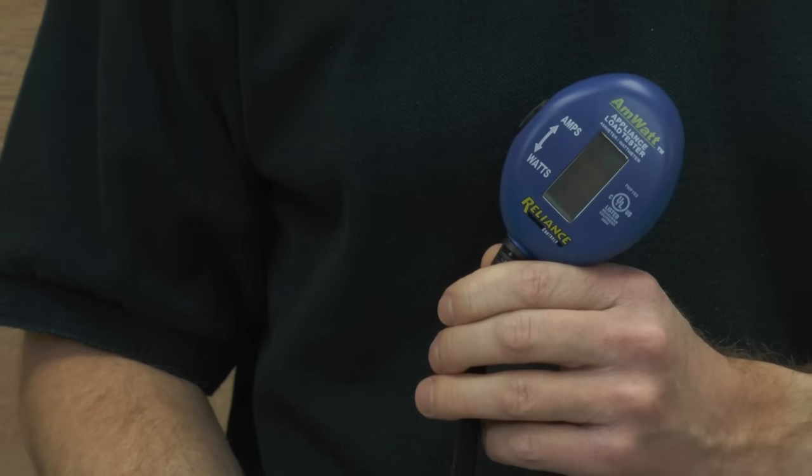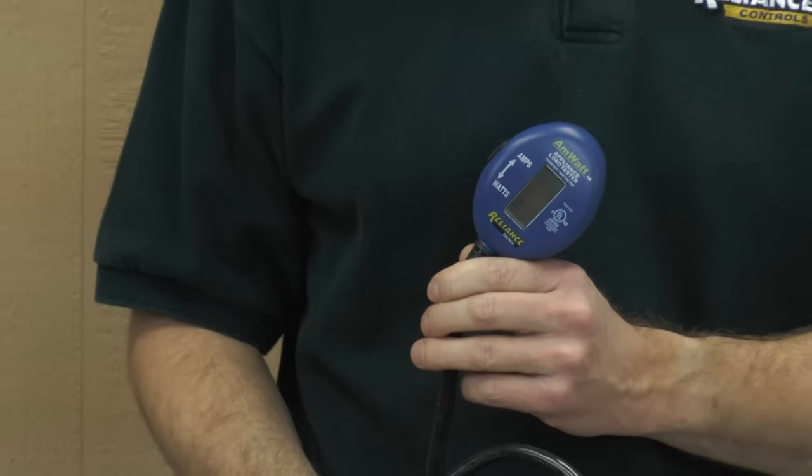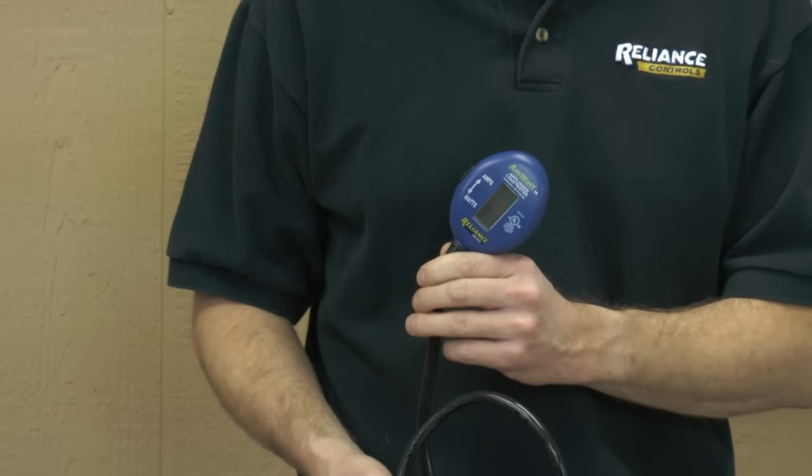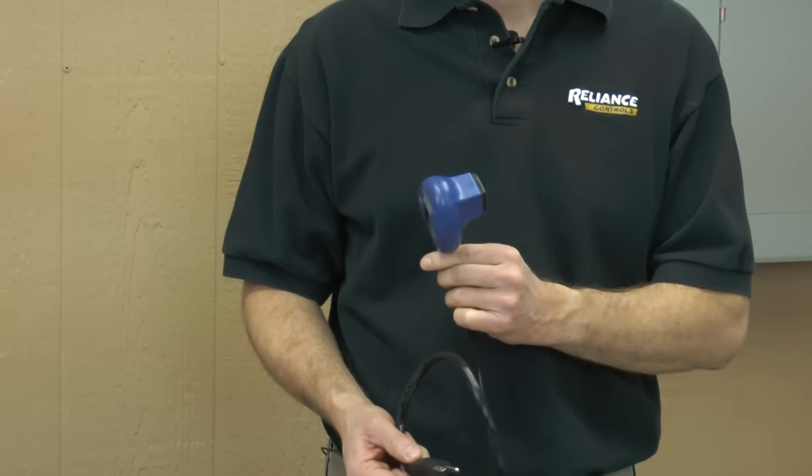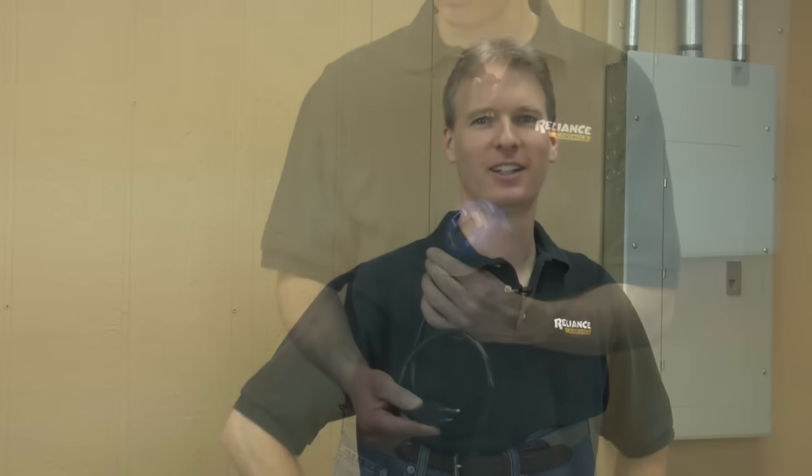You can also use a simple plug-in watt meter, like the Reliance Control's AMWatt, to help you determine how much power an appliance, such as a refrigerator or sump pump, requires. Be sure to refer to your installation manual for more information on load balancing.